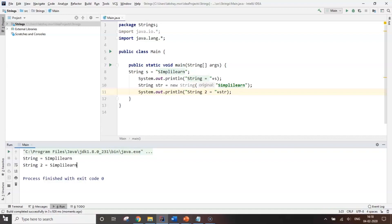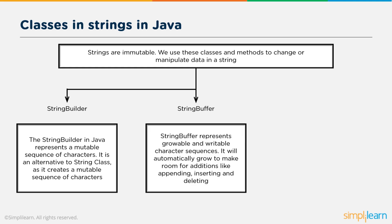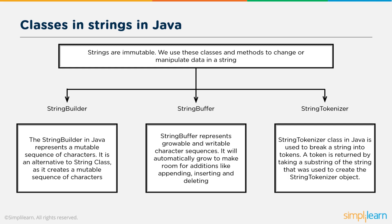Let's move on to classes and strings. We know strings are immutable, so what if we want to change something inside a string? We use these classes to manipulate strings in Java. First is StringBuilder, which represents a mutable sequence of characters — an alternative to the String class. Next is StringBuffer, which represents growable and writable character sequences that automatically grow to make room for appending, inserting, and deleting. Finally, StringTokenizer is used to break a string into tokens by taking substrings of the original string.